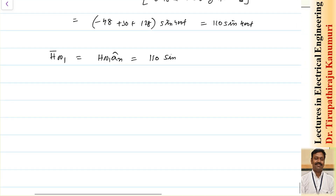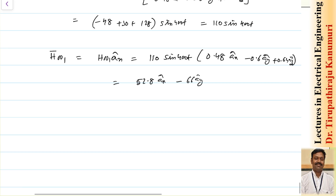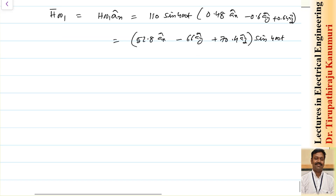The vector Hn1 equals the magnitude multiplied by the unit normal direction vector: 110 sin(400t) multiplied by (0.48 ax - 0.6 ay + 0.64 az), giving Hn1 = (52.8 ax - 66 ay + 70.4 az) sin(400t).